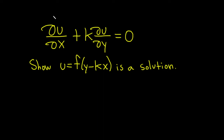In this problem we have a partial differential equation: del u del x plus k times del u del y is equal to 0. We're being asked to show that u, given by f of y minus kx, is a solution, where f is any differentiable function.